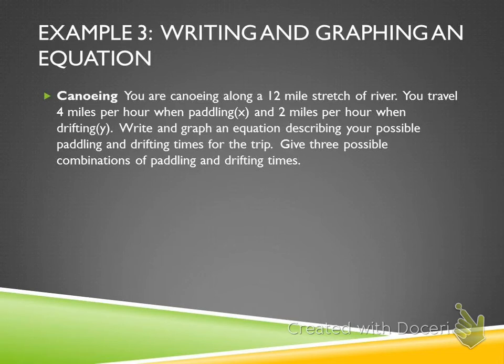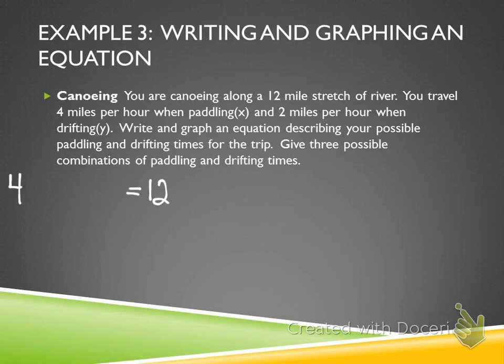This is a canoeing word problem. You're canoeing along a 12-mile stretch of river, traveling 4 miles per hour when paddling and 2 miles per hour when drifting. We have to set up an equation: 4x + 2y = 12, where 12 is our total distance, and x and y represent the unknown hours paddling and drifting. Find the x and y-intercepts.